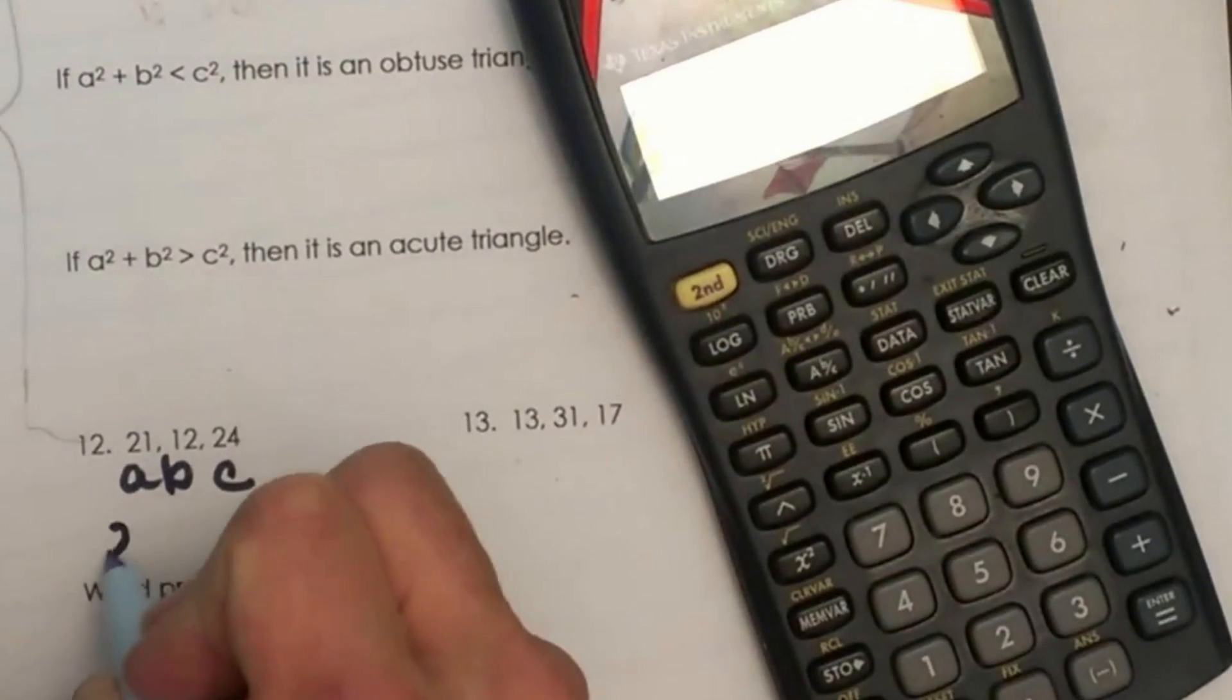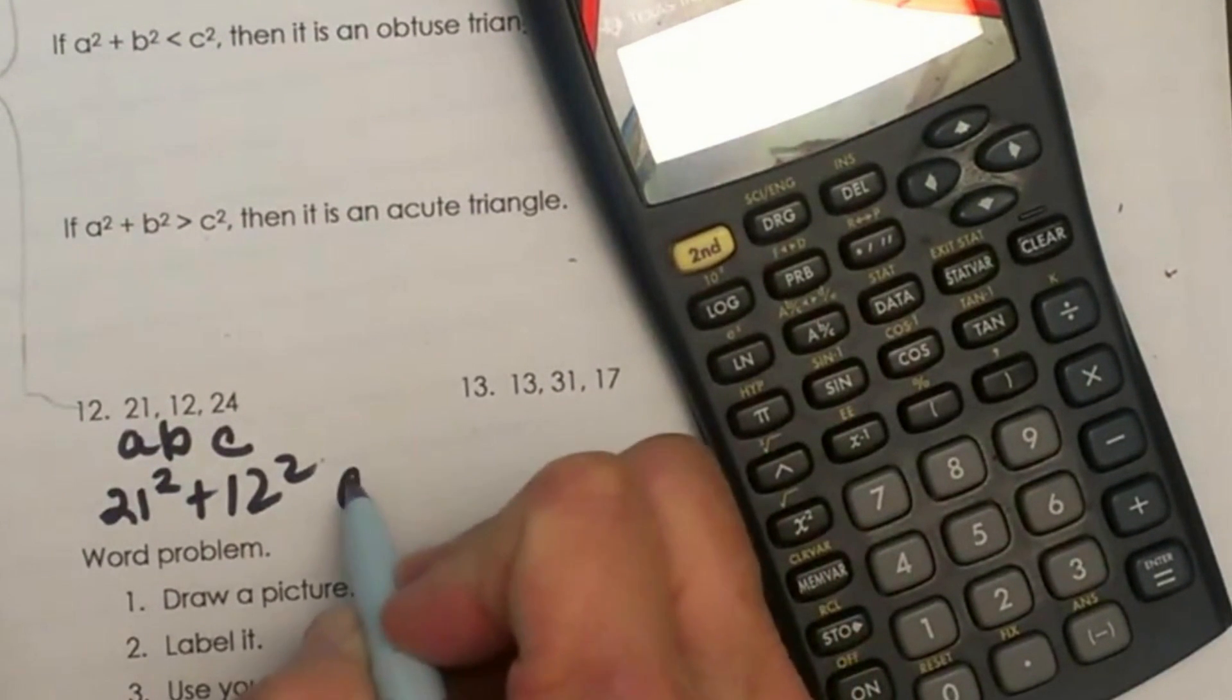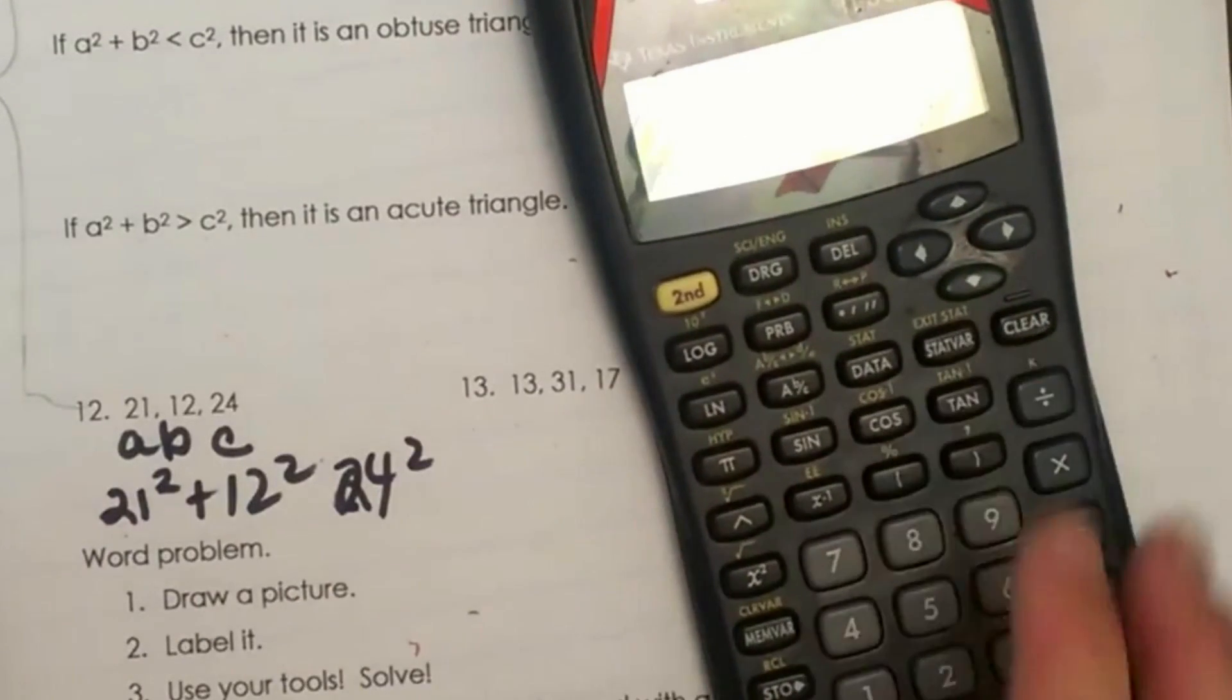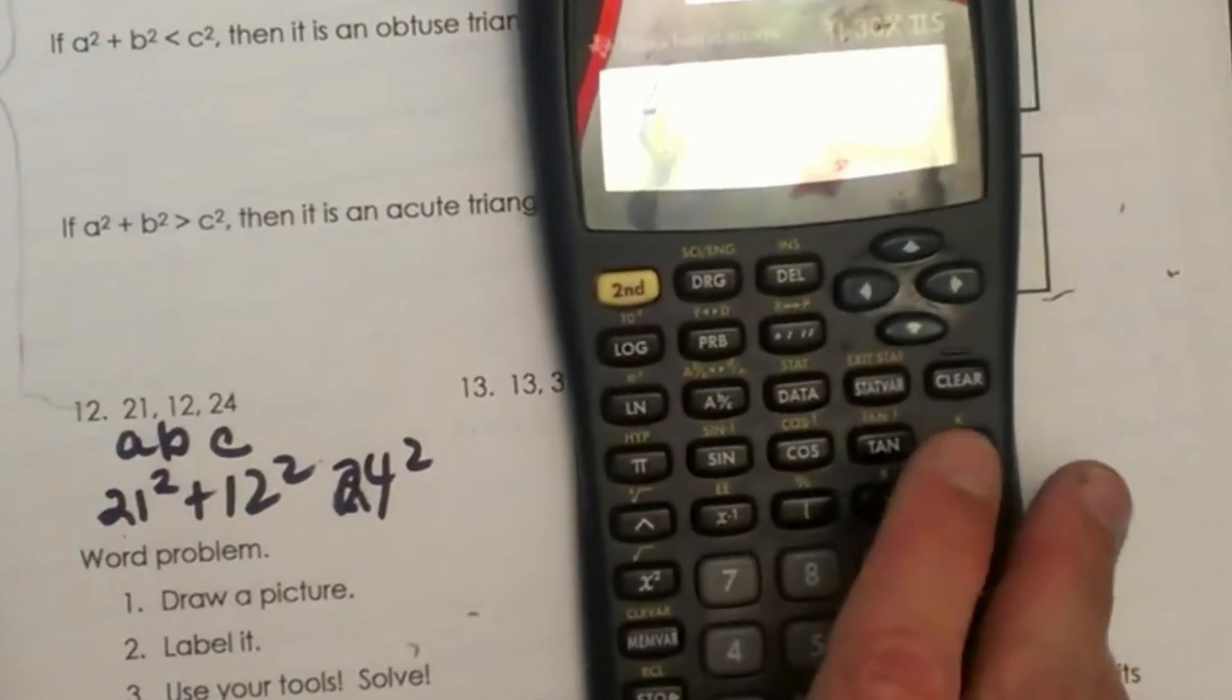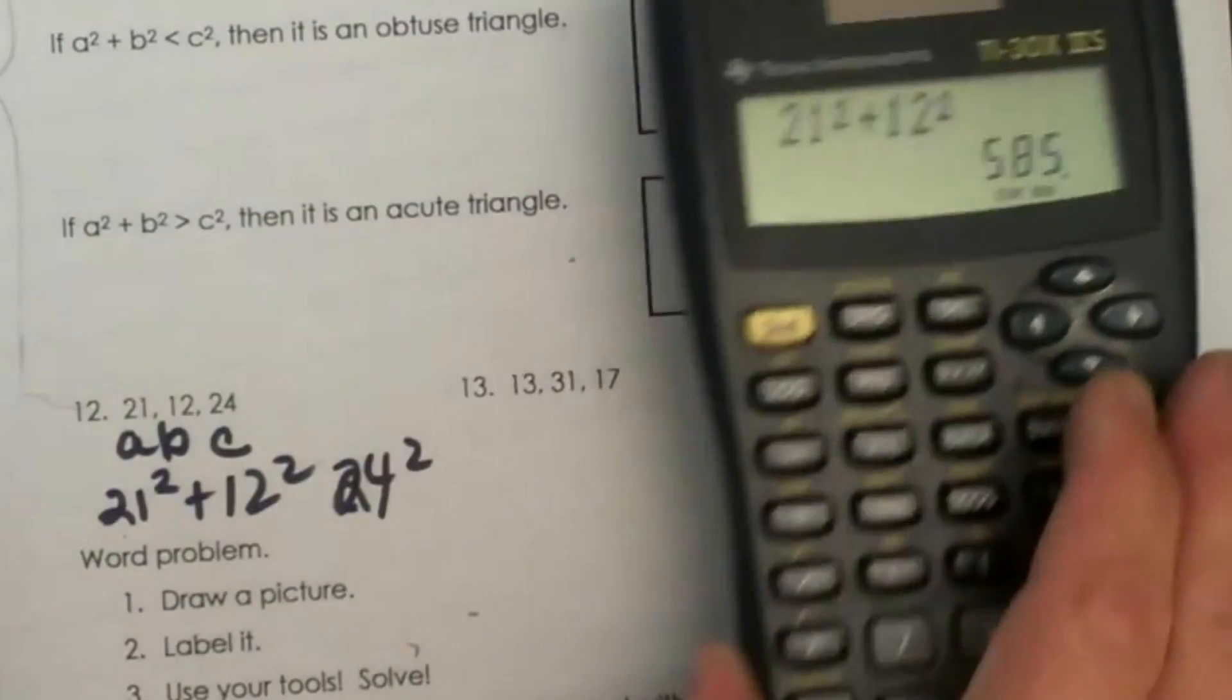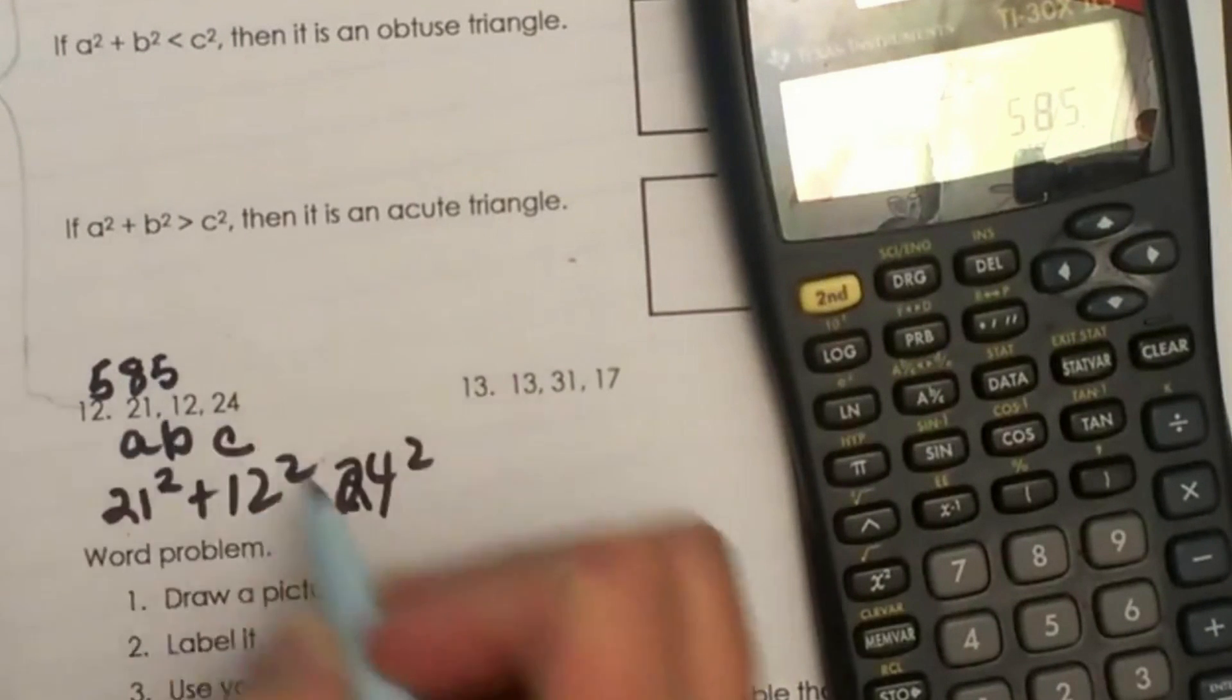So I am going to take 21 squared plus 12 squared and compare that to 24 squared. How do those compare? Well, 21 squared plus 12 squared, and I am just typing that straight into my calculator. That multiplies to 585. So I have 585 for my A squared plus B squared.